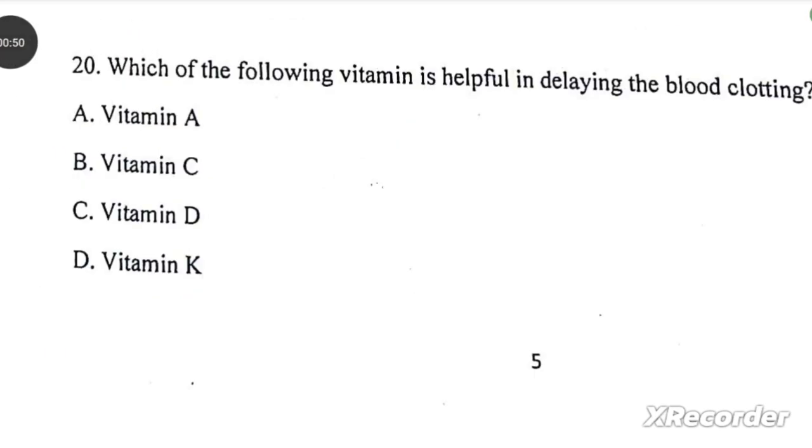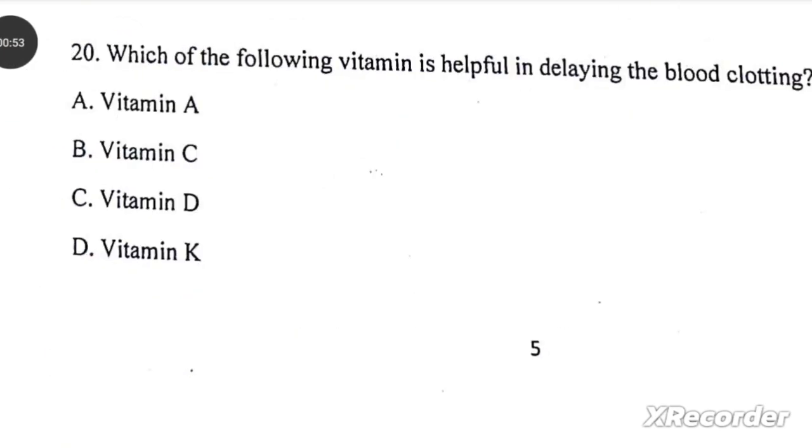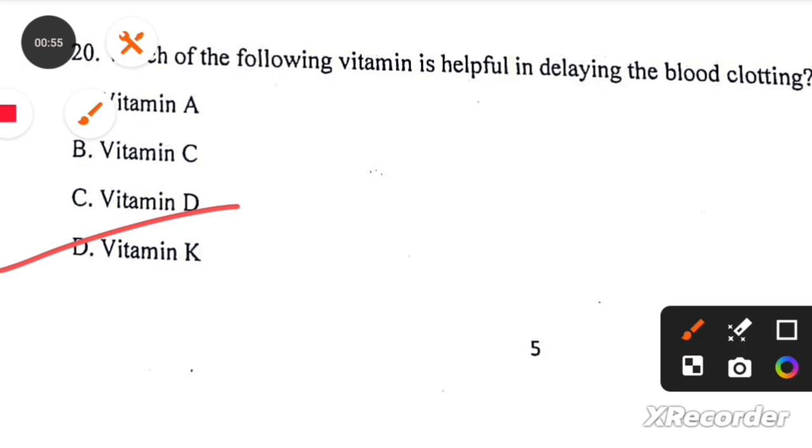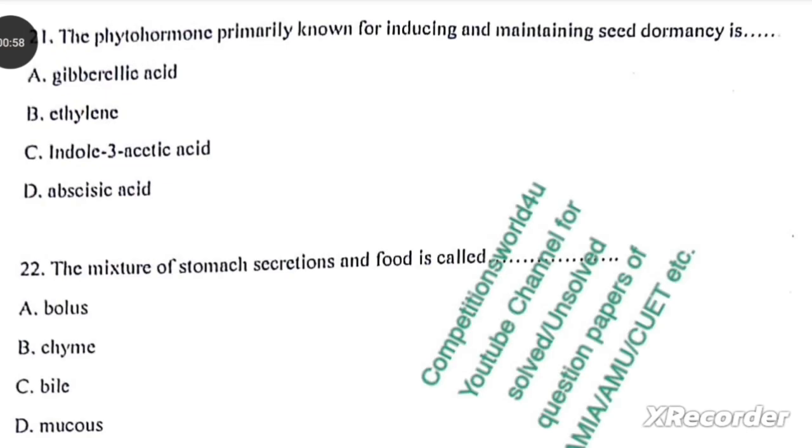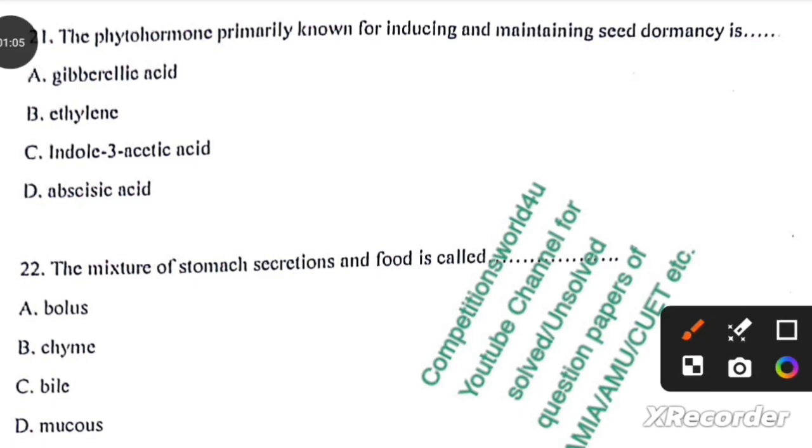Which of the following vitamin is helpful in delaying the blood clotting? Vitamin K. The phytohormone primarily known for inducing and maintaining seed dormancy is Isertransrap, option D.